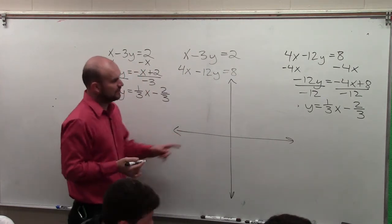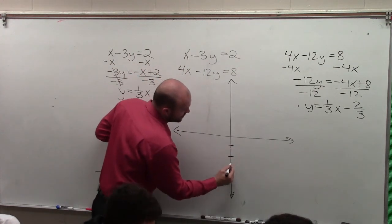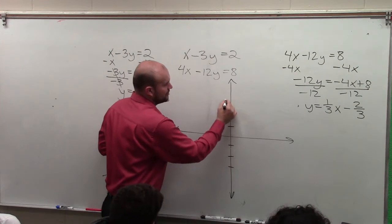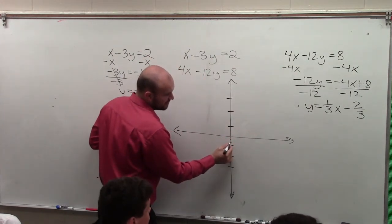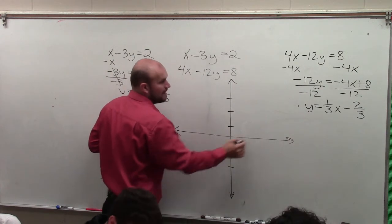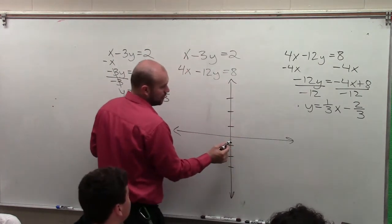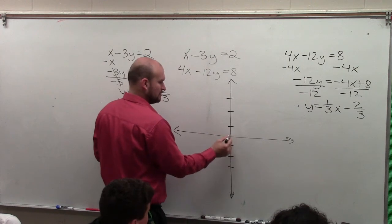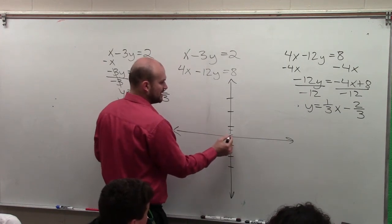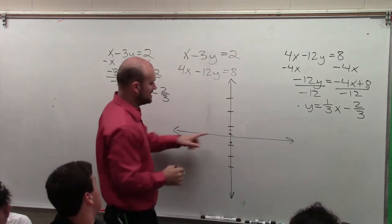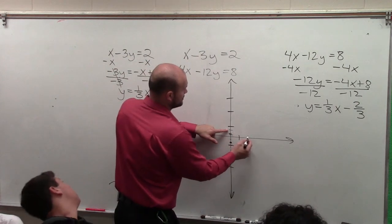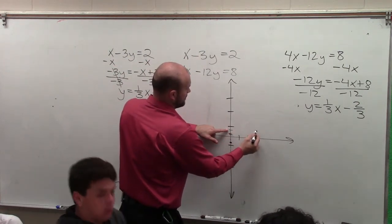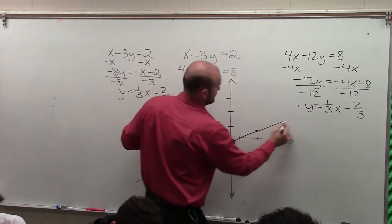How would you even graph this anyways? Well, if here's 1, 2, 3, 1, 2, 3. If I'm going to go down 2 thirds, so if I break this up into thirds, I'm going to go down 2 thirds. And then this is saying, go up 1. So again, you break this up into thirds. So basically what I'm doing is I'm going up 1 and then over 3: 1, 2, 3.